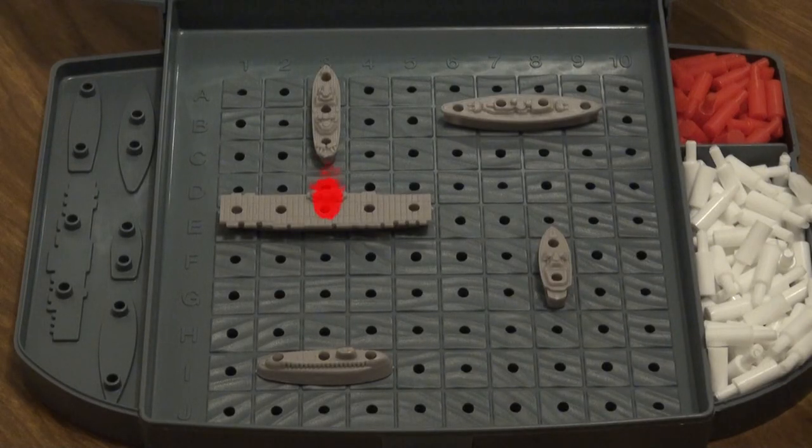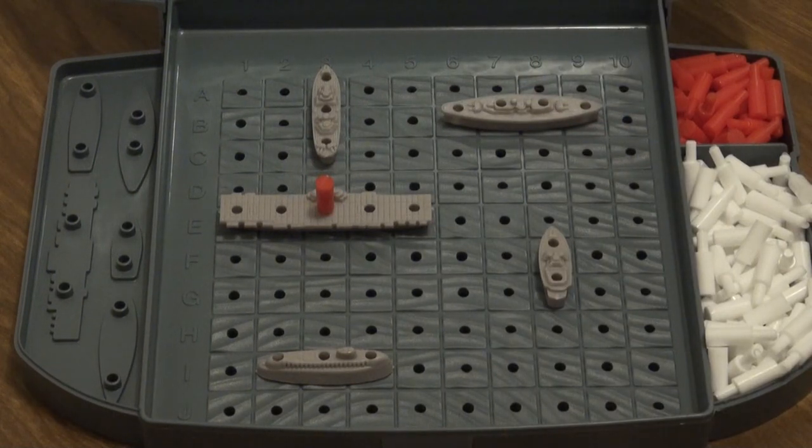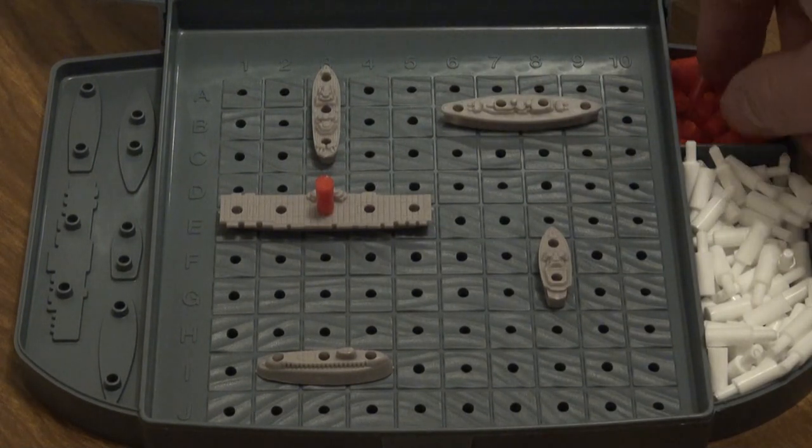When a player makes a hit, their opponent marks their ship with a red peg at the point of impact. The ship is damaged but not out of the game yet.